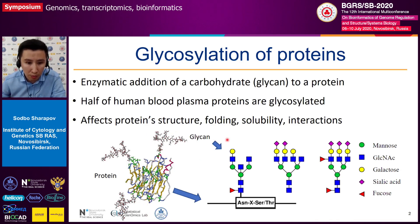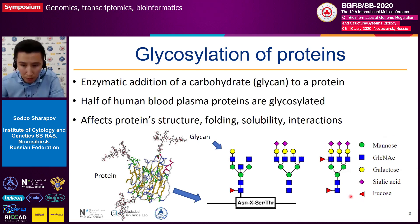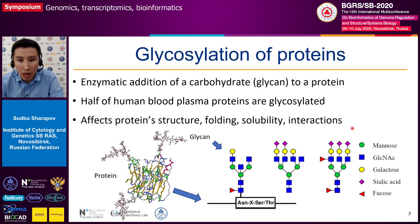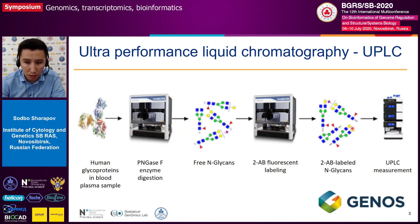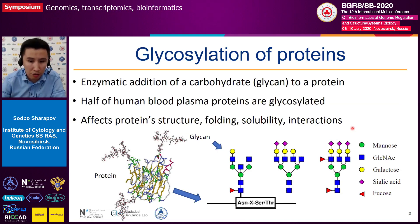The glycans are polymers of different oligosaccharides, most common of which are mannose, N-acetylglucosamine, galactose, sialic acid, and fucose. As you may have heard from Lutia's talk, the glycans affect proteins' physical properties, such as folding stability, solubility, et cetera, as well as their biological functions, such as different kinds of interactions — for example, protein-protein, cell receptor, and host-pathogen interactions.